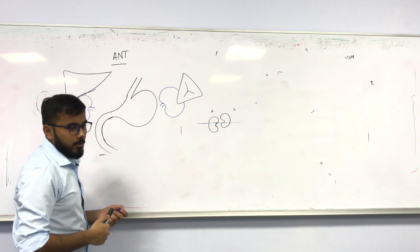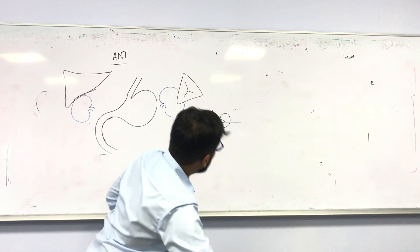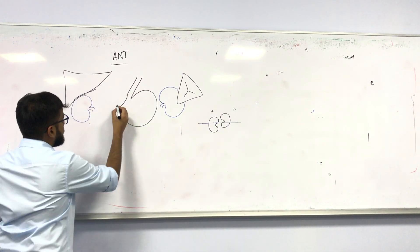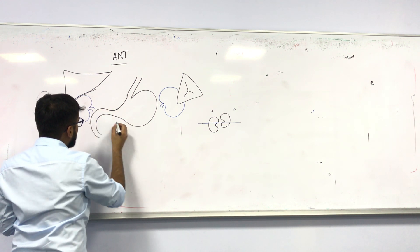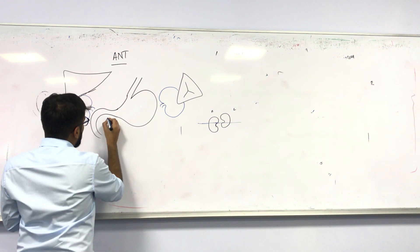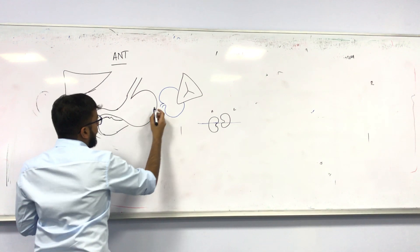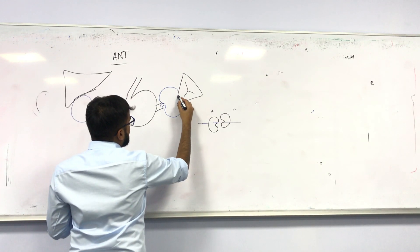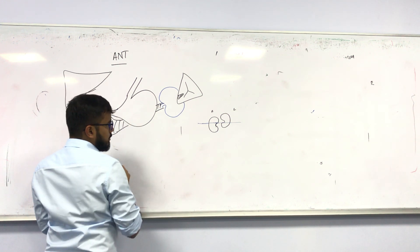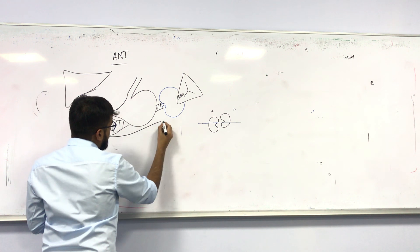The next important structure is the pancreas. You have the pancreas projected over here, along with the duodenum and jejunum in this region.